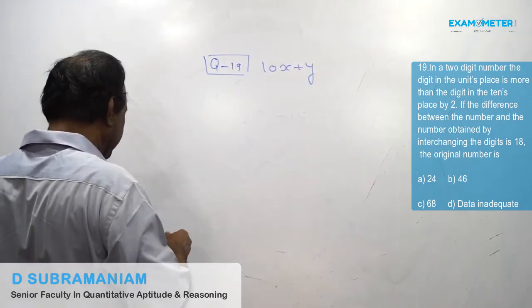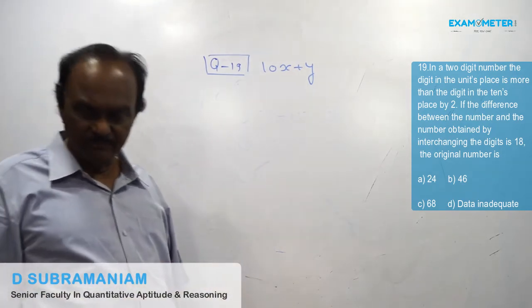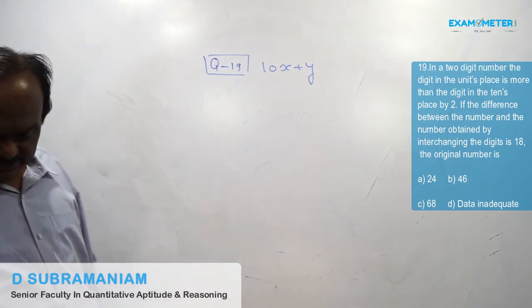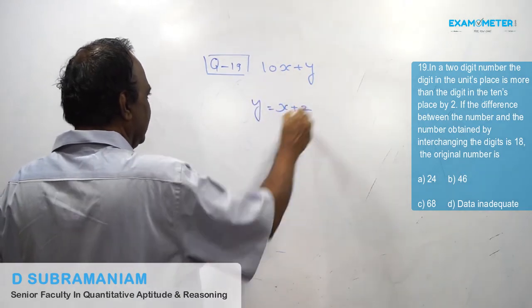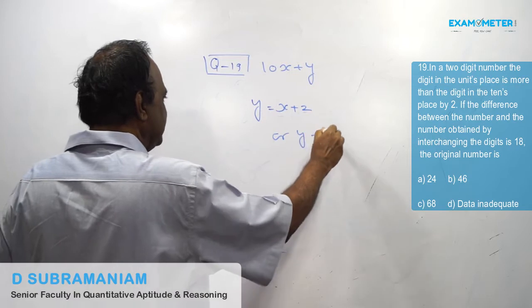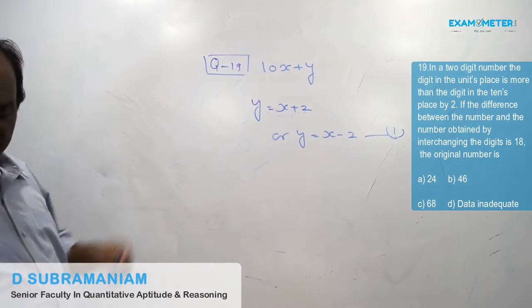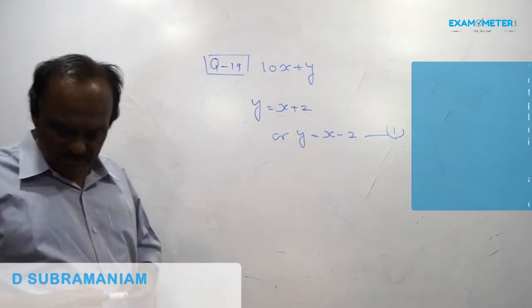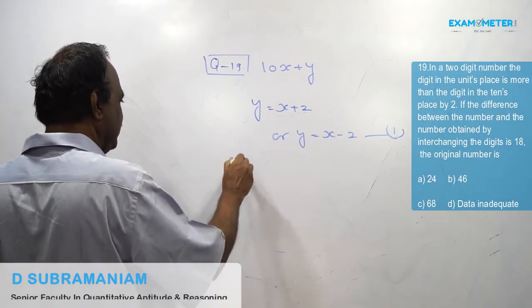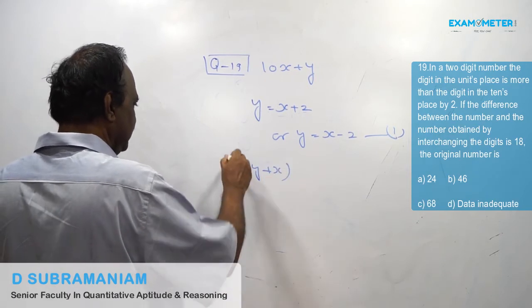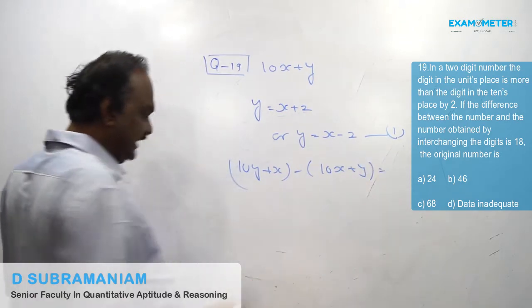Take the original number as 10x + y. Then y = x + 2, or y = x − 2. This is one equation. Then 10y + x − (10x + y) = 80.